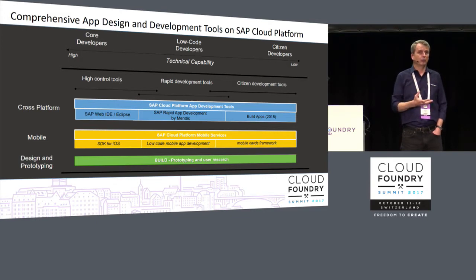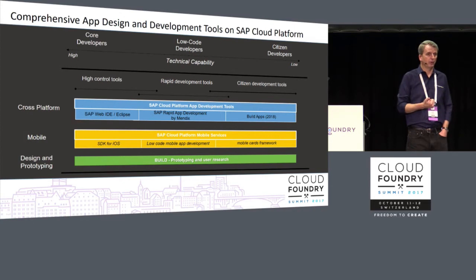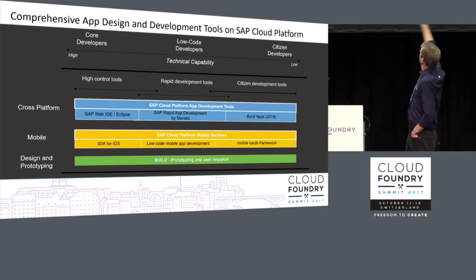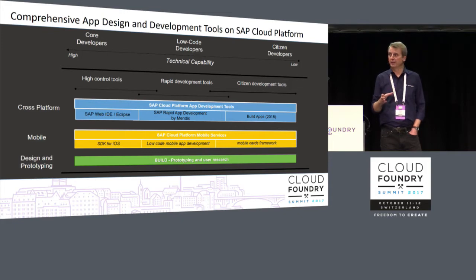A common challenge is that core developers can't be the only source of innovation. There are two communities traditionally left behind: business specialists who understand the business but may not be as development-savvy as a typical DevOps or Cloud Foundry developer, and citizen developers — people who are technology savvy but not in the sense of true software development. We want to branch out and make those people active contributors to innovation within a company. I'll now hand things over to Nick, who will talk about rapid application development tooling in the context of SAP Cloud Platform.